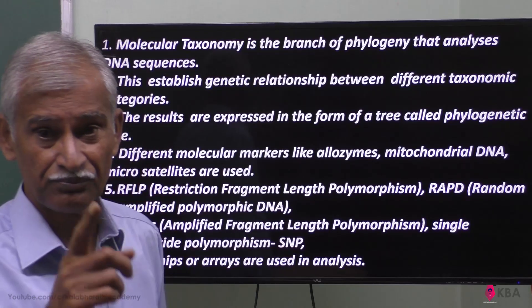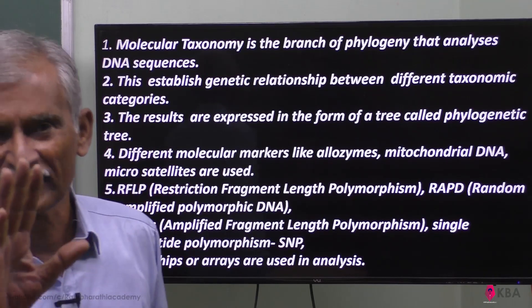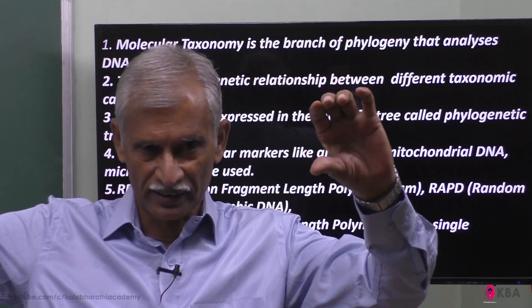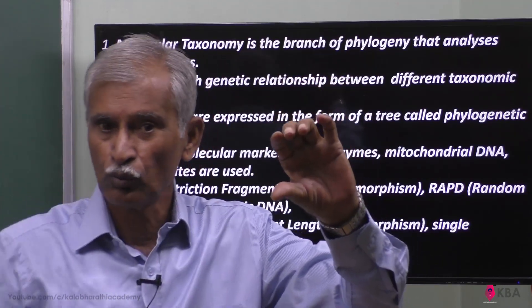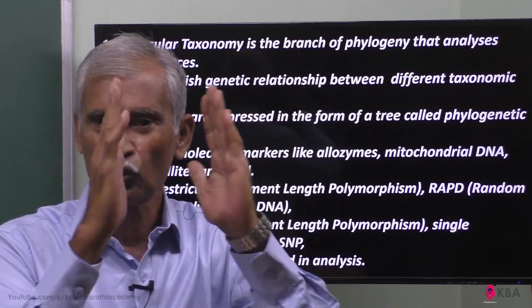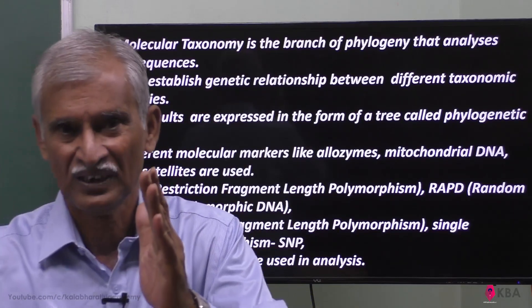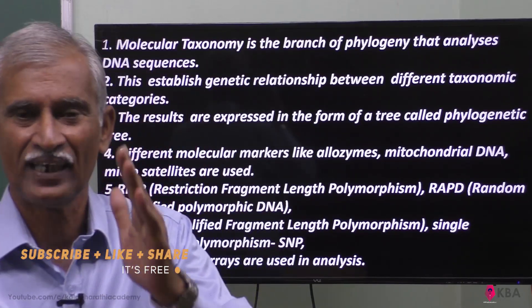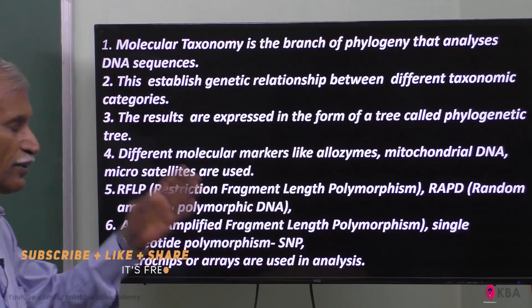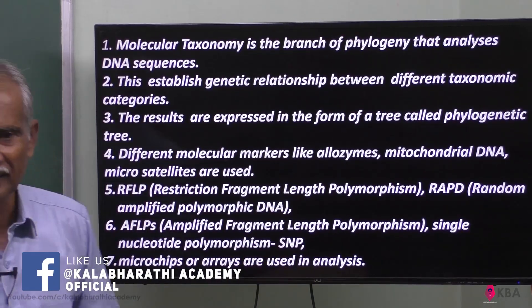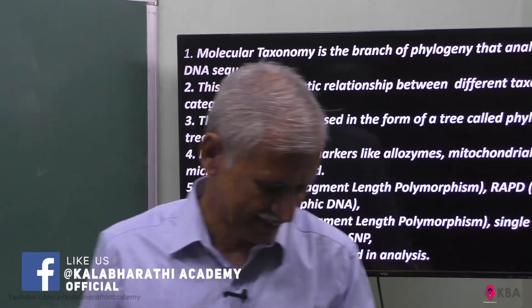In a single chromosome there are many sequences, but not all sequences code for proteins. There is coding DNA and non-coding DNA. Non-coding regions can be cut, amplified, and analyzed for polymorphism. Microchips or arrays are used in the analysis, and these molecular methods are applied in plant classification. Thank you, students — we will meet again in the next class.